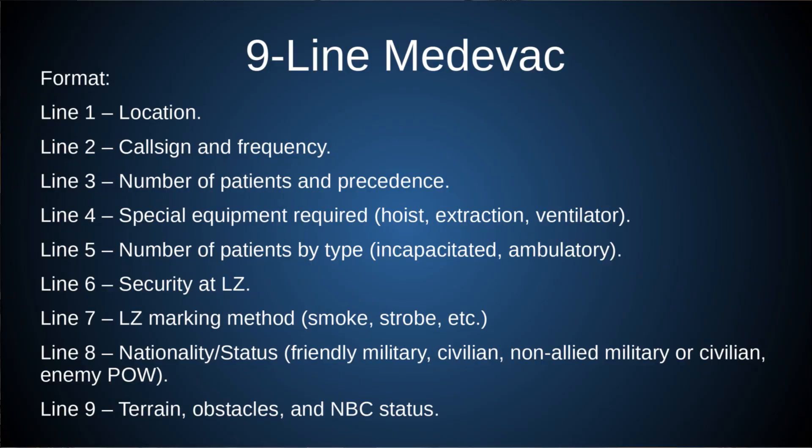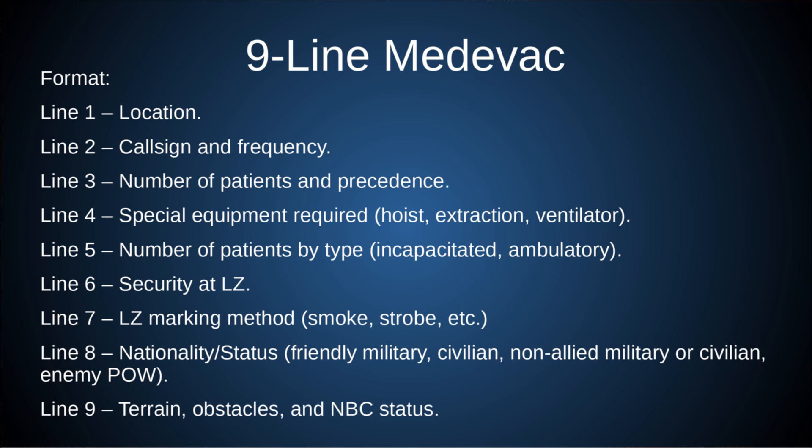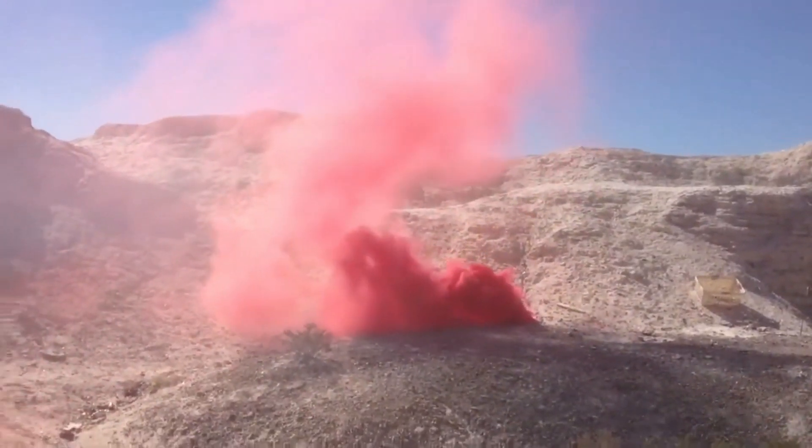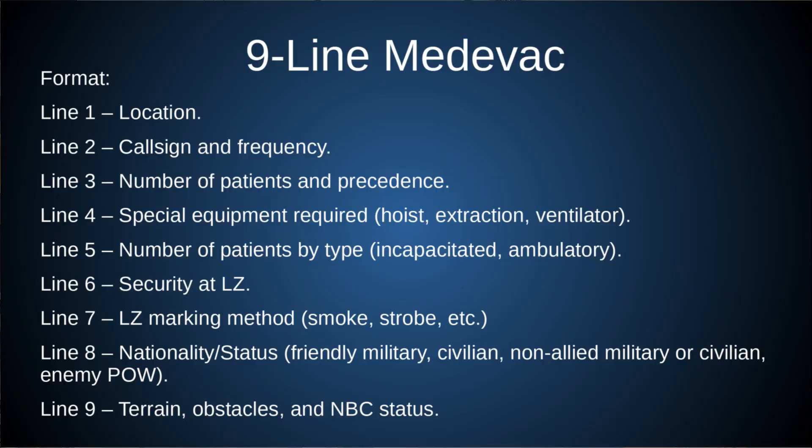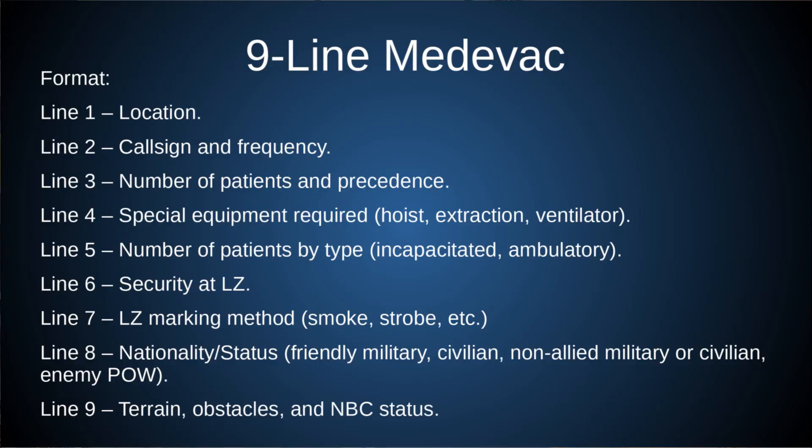Line 6 is security at the LZ — the loading zone. Is the medevac team going to expect to be shot at, or is there solid security with a perimeter and intersecting lanes of fire? Just give a brief description of how dangerous the loading zone is. Line 7 is the loading zone marking method — smoke grenades in different colors, strobe, IR strobe, tape, or just waving your arms. Line 8 is nationality and status: friendly military, civilian, non-allied military, or enemy POW — you'll have different protocols for each. Line 9 is terrain, obstacles, and NBC status — any hazards the medevac team will have to negotiate at the LZ.